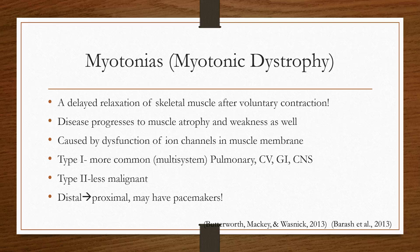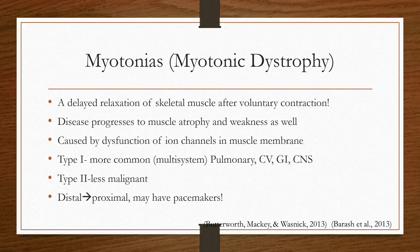The thing to remember with myotonic dystrophy is that it can affect all systems — it's multi-system. It affects certain ion channels. There's a subclass where many diseases fall under one umbrella. Different channels can be affected, but the same result and treatment apply. There's type 1 and type 2. Type 1 is more common and more severe. Type 2 is less severe and progresses from distal to proximal muscles. Many patients will have pacemakers because it can affect the pulmonary and cardiovascular systems, especially conduction. These patients can have profound AV block and other arrhythmias.